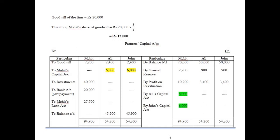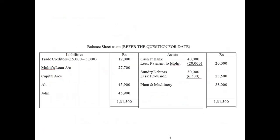In the retirement chapter, we have to focus on the partners capital account. Everything else is very similar to the admission chapter. Only the partners capital account is a little bit different, and it will also have some impact on the balance sheet.